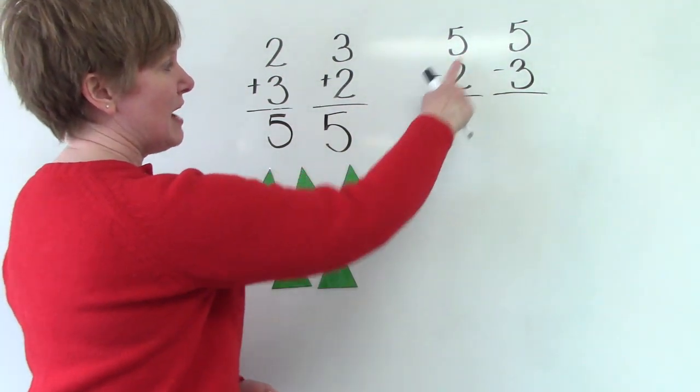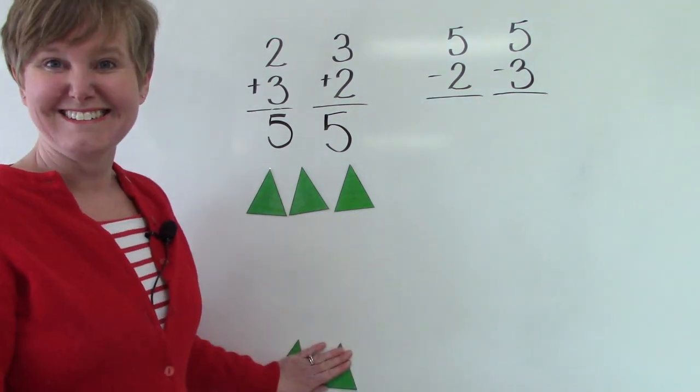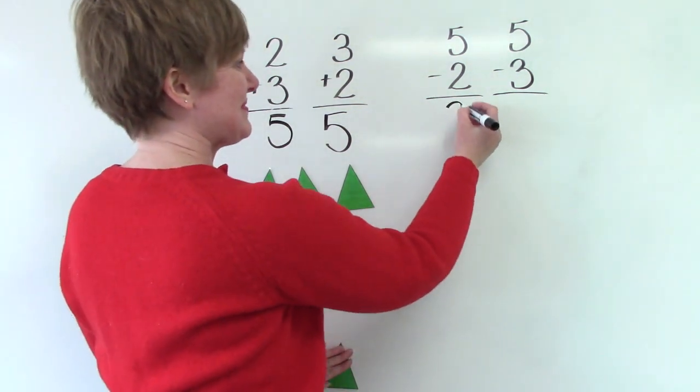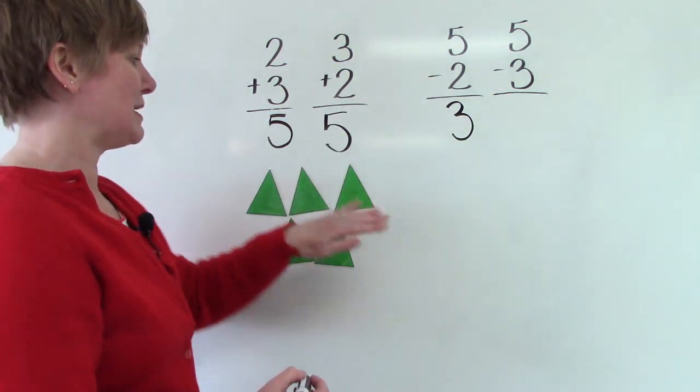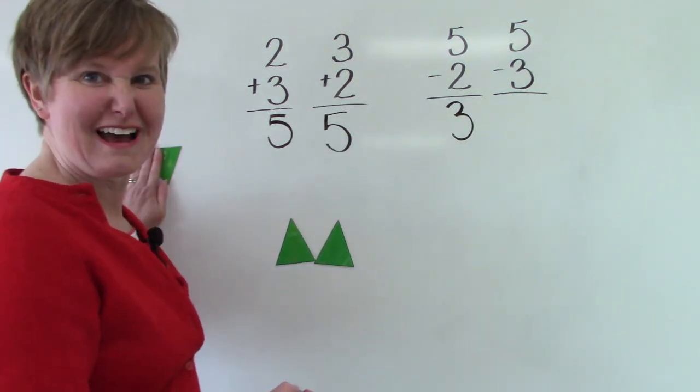If we have 5 and we take 2 away, our answer is 3. If we have 5 but we take 3 away, we have 2.